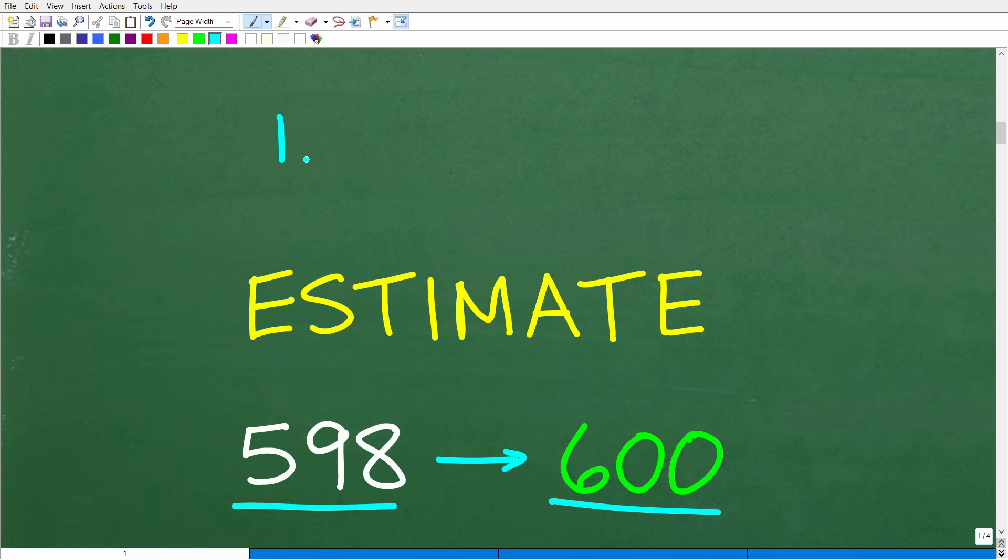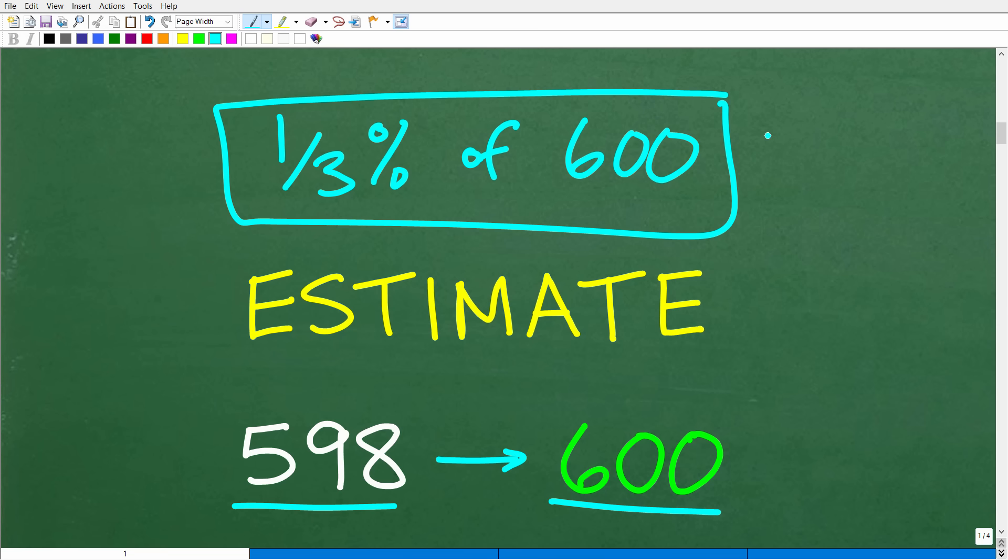So the new equivalent problem will be one third percent of 600. All right. Now, if you were thinking in this term or these terms right here to do this, you know, problem using mental math, and you're like, all right, I'm going to round this 598 to 600, that is fantastic.